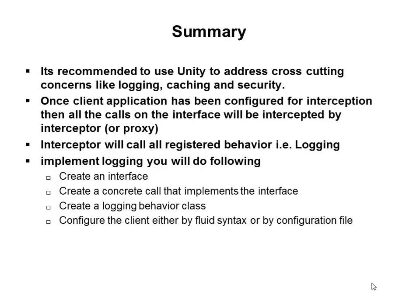Summary: It is recommended to use Unity to address cross-cutting concerns like logging, caching and security. Once a client application has been configured for interception, all calls to the interface will be intercepted by the interceptor or proxy, which will call all registered behaviors — logging in our case. To implement logging you need to: create an interface, create a concrete class that implements the interface, create a logging behavior class, and configure the client either by fluent syntax or by configuration file. Thank you so much for attending the course.